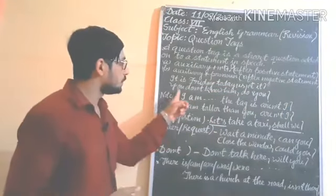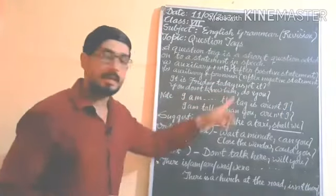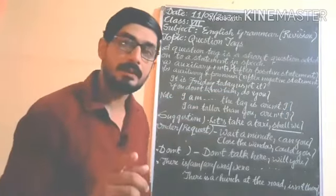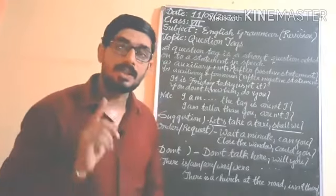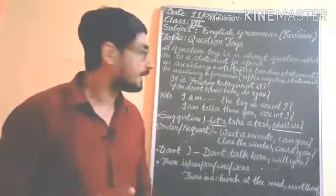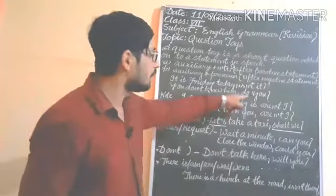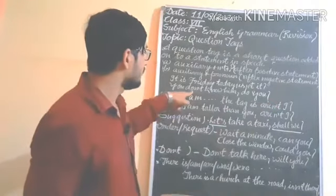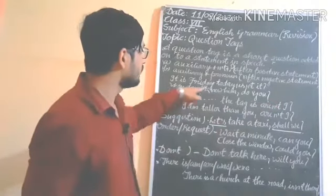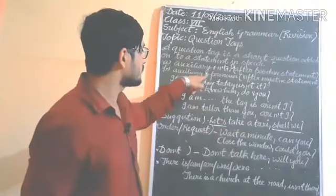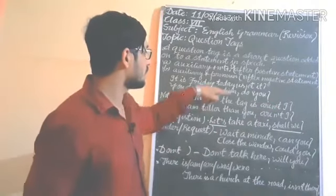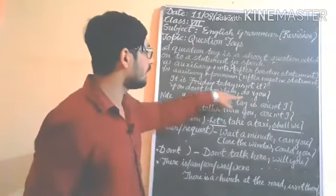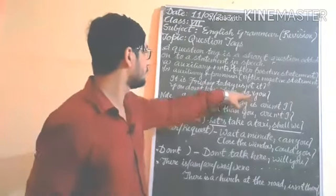If the sentence is negative — for example, 'You don't know him' — we include a positive question tag: 'do you?' The structure for a positive question tag is: auxiliary plus pronoun. Here the auxiliary is 'do', followed by the pronoun 'you'.